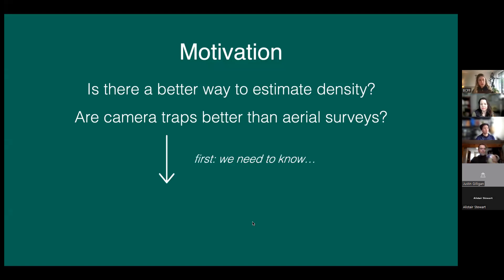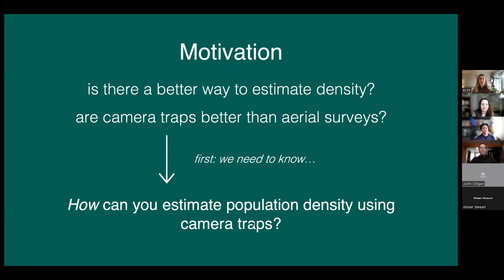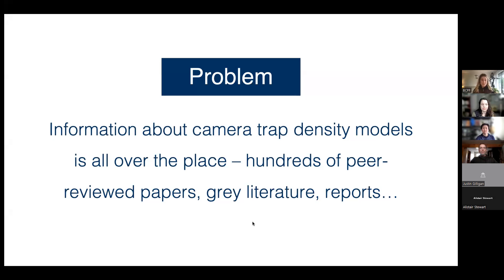So the motivation for this work — questions Holger was asking — is: is there a better way to estimate density? What else is in our toolkit? Could camera traps be better than aerial surveys for estimating density? But to answer those questions, we first need to find out how we can estimate population density using camera traps and what methods are available. We encountered a big problem: information about camera trap density models is scattered everywhere — hundreds of papers, gray literature, reports. It's unrealistic to ask practitioners to make decisions if they have to read a year's worth of papers to make sense of what's out there. So we need to consolidate it all into one single place — and that is the handbook.